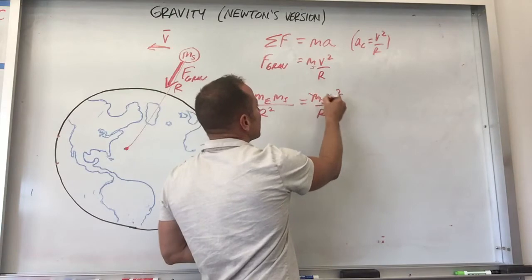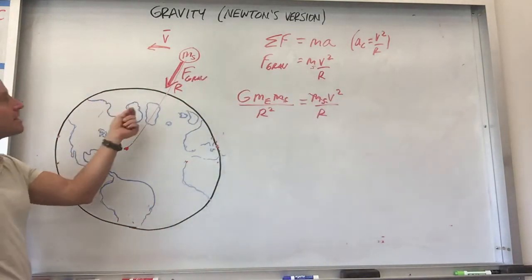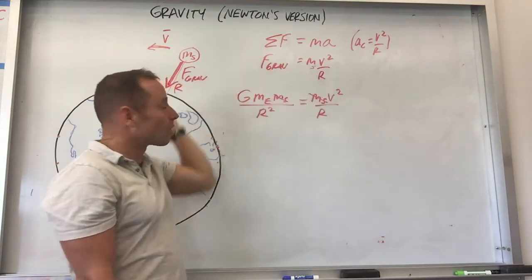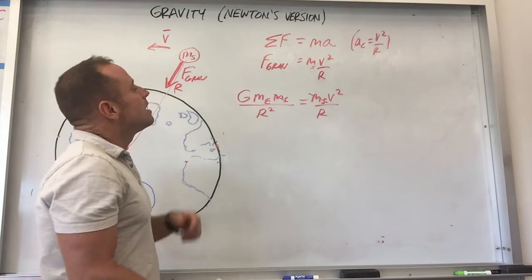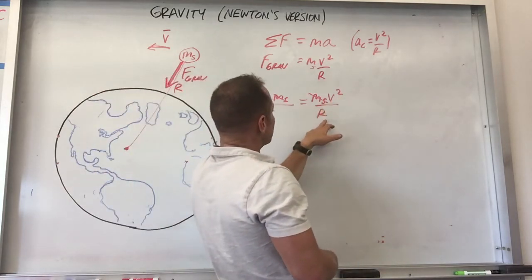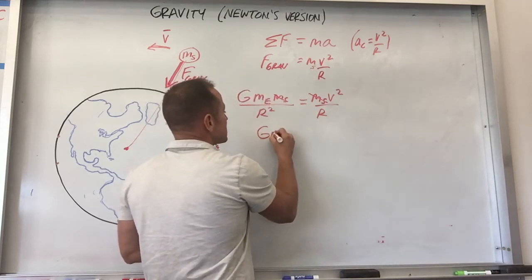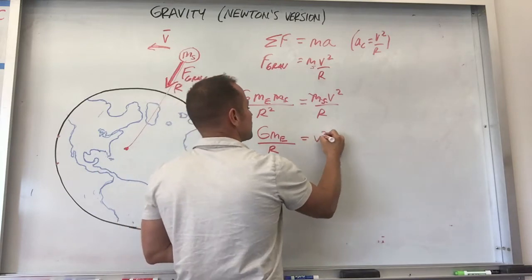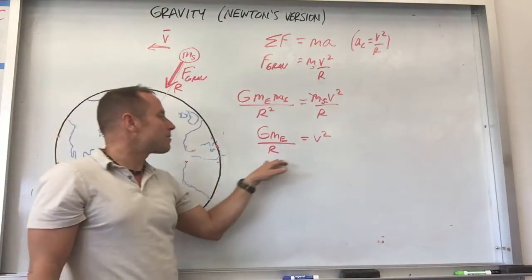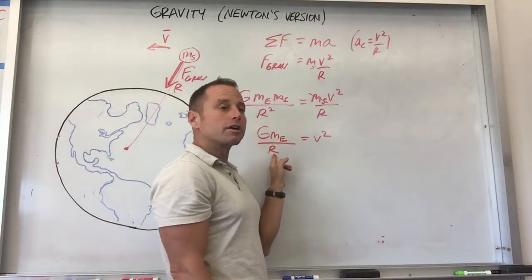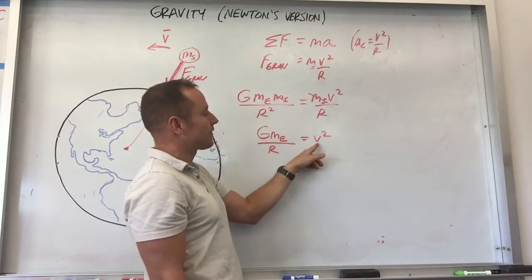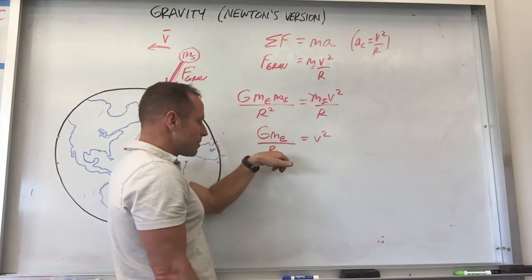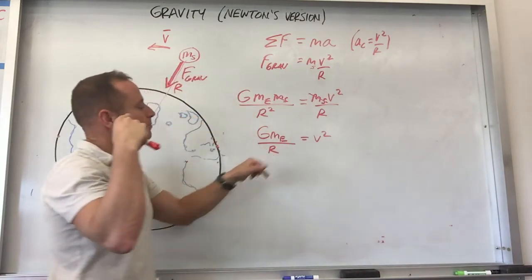Right away you notice the mass of the satellite cancels out. That's important — it means you can put a space station or a paper clip in orbit at the same place and they'd need the same velocity. Bringing r over to the other side gives an expression relating the orbital radius to the required speed: G·M_Earth / r = v². Given a particular radius, there's one specific speed needed for that circular orbit.